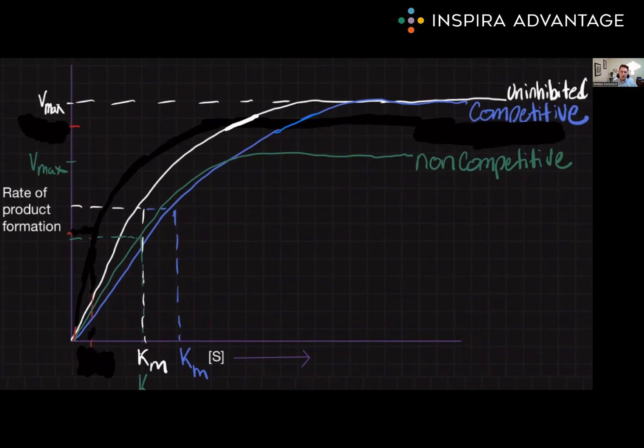If the inhibitor is binding to the allosteric site, that means that the substrate can still bind to the active site. It just won't be converted to a product. Because this messes with how much enzyme is functioning properly, Vmax will decrease. However, Km is unchanged. This is because we didn't affect the affinity of the enzyme for the substrate, since the active site isn't affected.